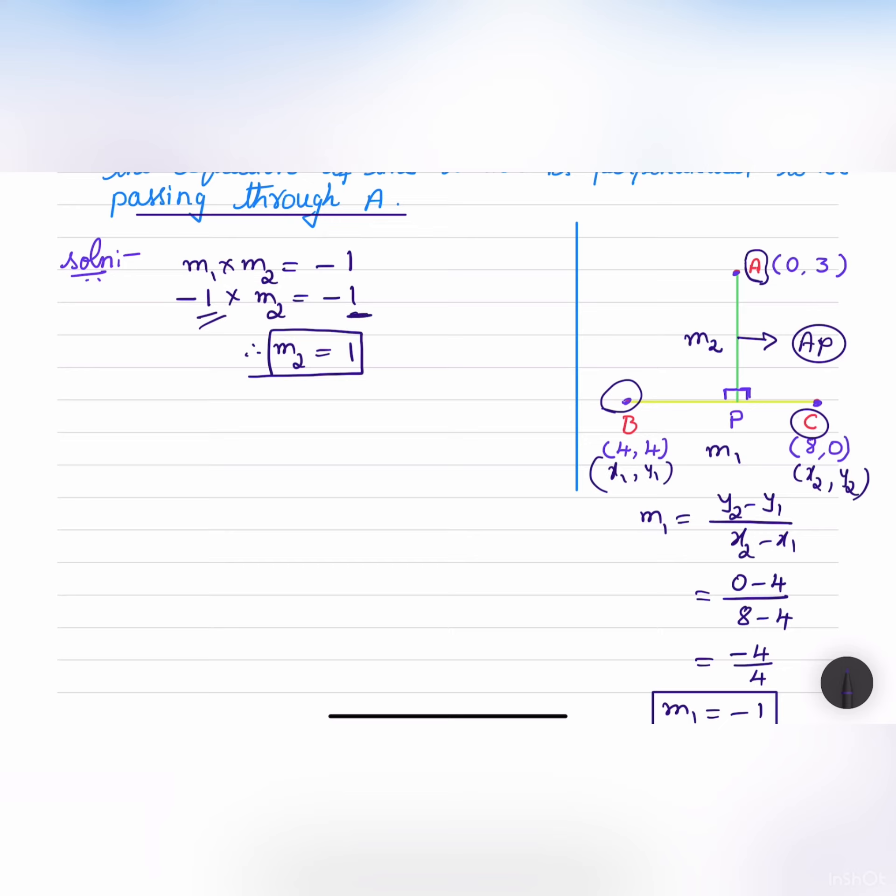Now we have the equation of line Y is equal to Mx plus C. Y is equal to M is 1 and X plus C is the Y intercept. Y intercept is here 3. This is Y intercept 0, 3. 3 is the Y intercept. Y is equal to X plus 3.